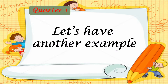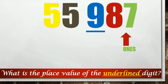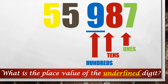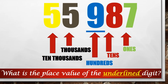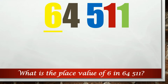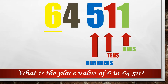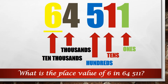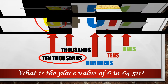Let's have another example. What is the place value of the underlined digit? Ones, tens, hundreds, thousands, ten-thousands. The underlined digit is nine, and the place value is hundreds. What is the place value of six in sixty-four thousand five hundred eleven? Ones, tens, hundreds, thousands, ten-thousands. The underlined digit is six with the place value of ten-thousands.